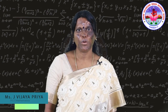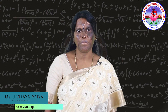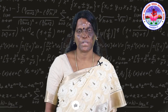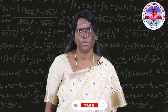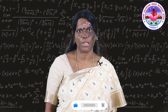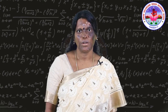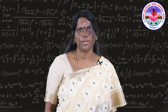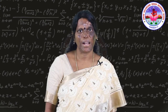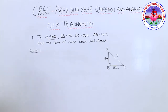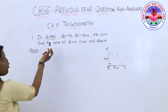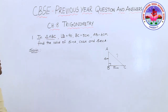Hello students, today we are going to see problems from trigonometry. These problems are related to CBSE previous year sample paper questions. We are going to use the trigonometric table values as well as trigonometric identities to find the value of given expressions, as well as the proving part where we use trigonometric identity to prove that LHS equals the right hand side.